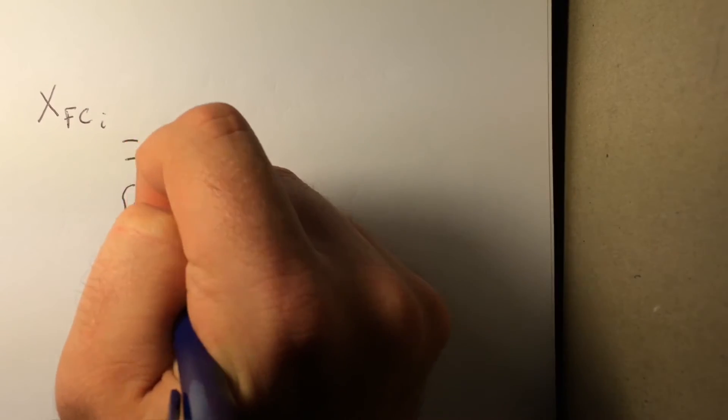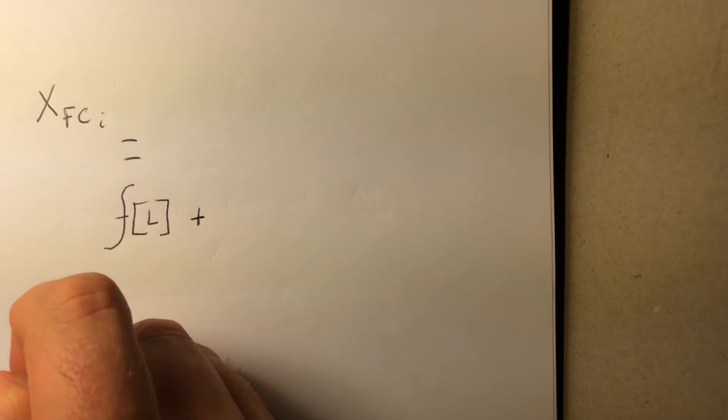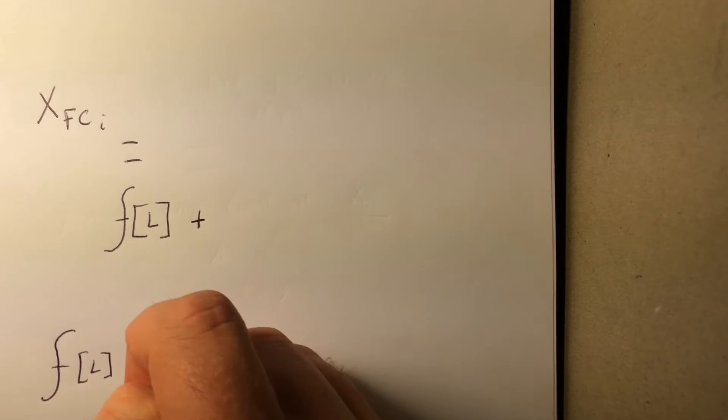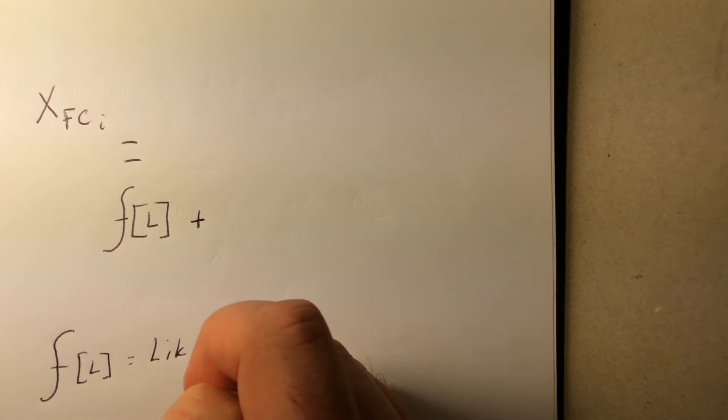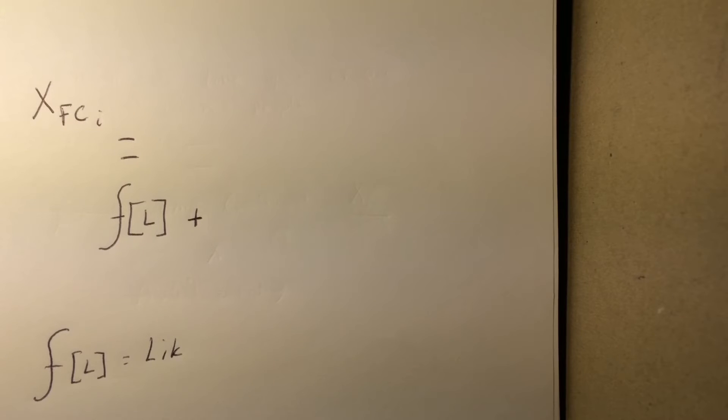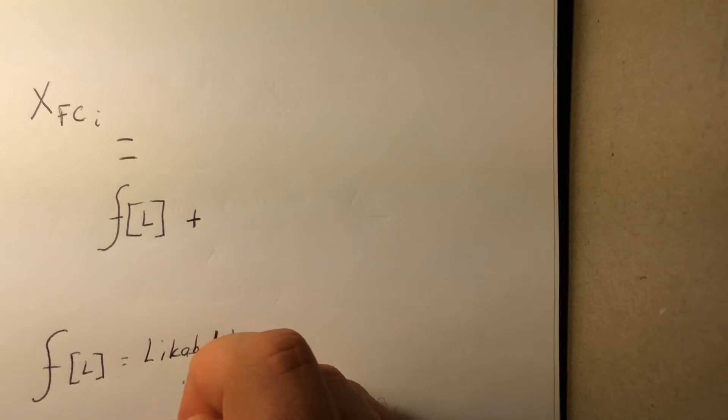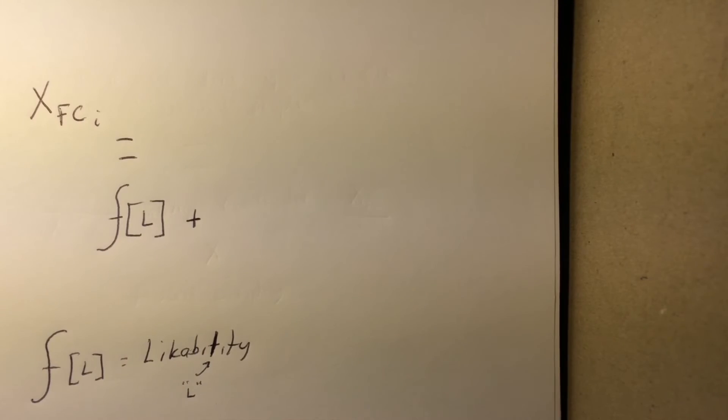I believe there are two separate components of this as well. The first is a function of your likeability. I've got to figure out how to spell this right. I'm going to take this time to enjoy the epic music chosen to place above a math formula. Listen, it's math. I had to do something to make it more. Yeah, I'm pretty sure that's how you spell it. Likeability, I'm not good at spelling.